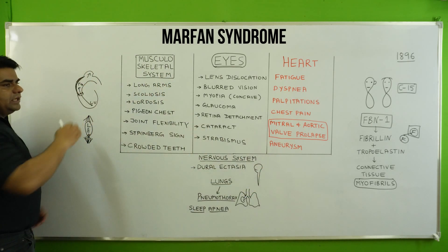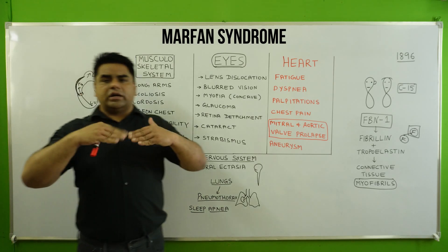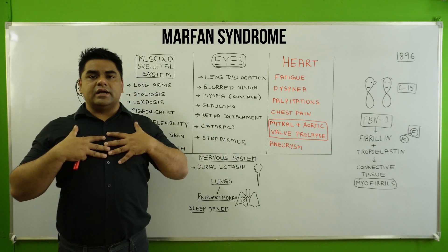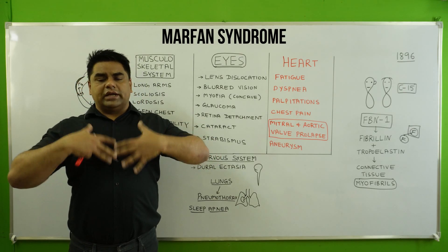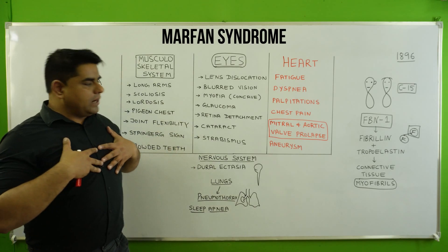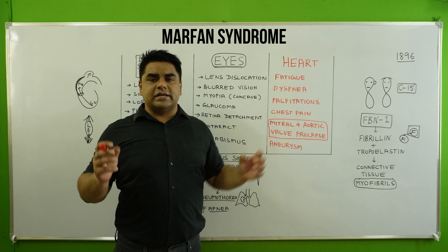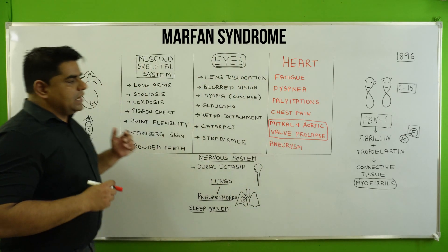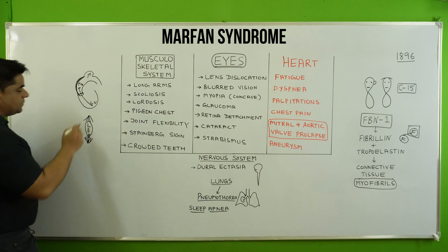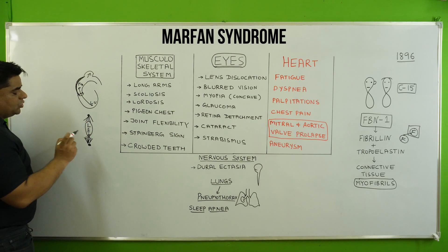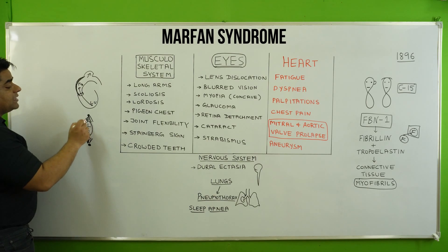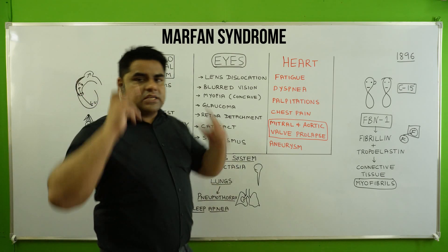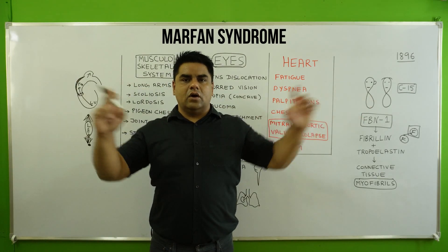Please note and highlight: this myofibril-containing connective tissue is present in the arc of the aorta, in the mitral and aortic valves — which show great elasticity — in the lungs, in the bones, in the skeletal muscles, in the fingers, in the toes, and especially in the suspensory ligament of the eyes.